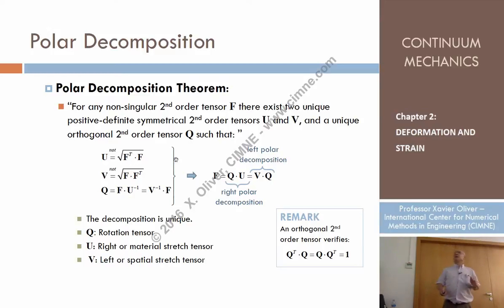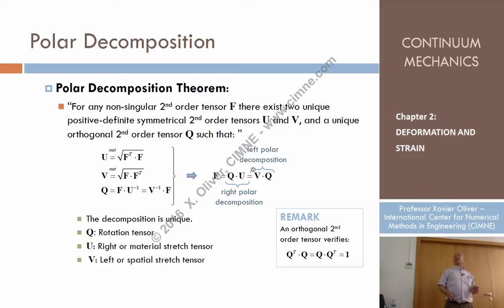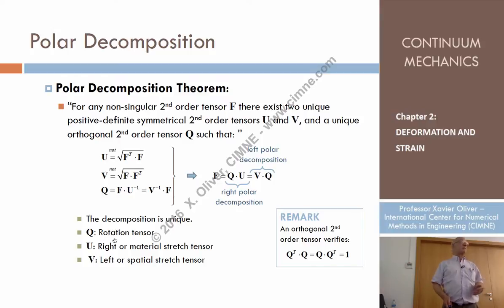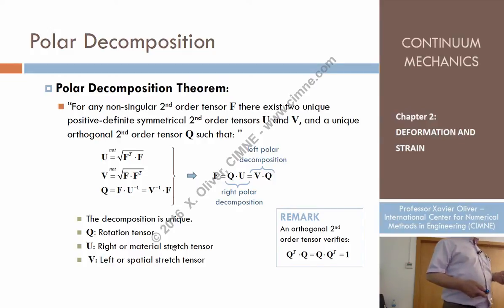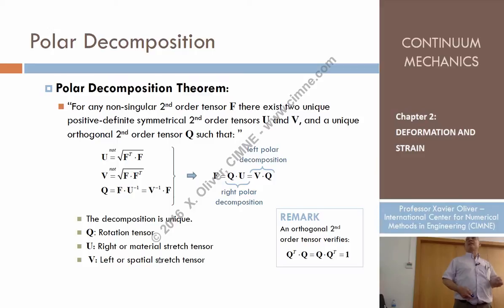According to the polar decomposition, the deformation gradient tensor F can be decomposed into an orthogonal tensor Q times another tensor U, or another tensor B times an orthogonal tensor. This Q is called the rotation tensor — I'm introducing a physical word here. U is called the material stretch tensor, because information about the stretches is in there. And B is also a stretch tensor because all stretches are contained there.